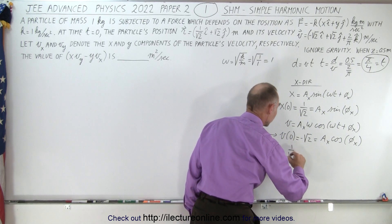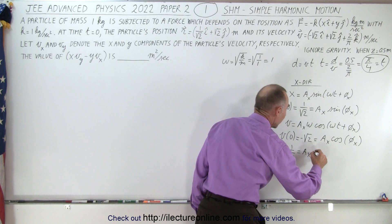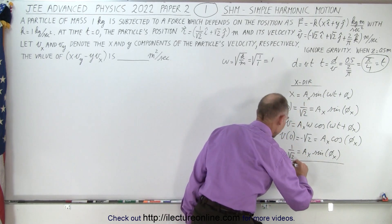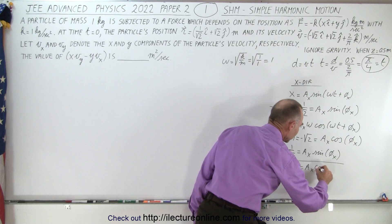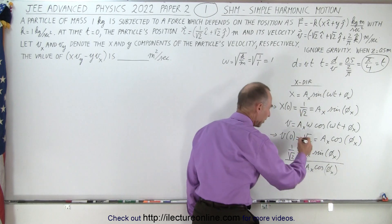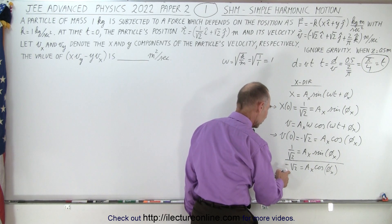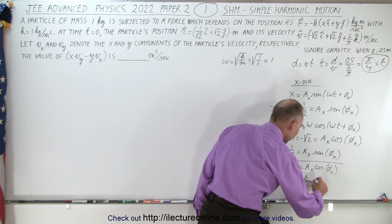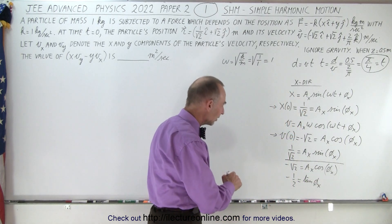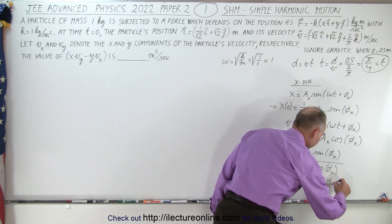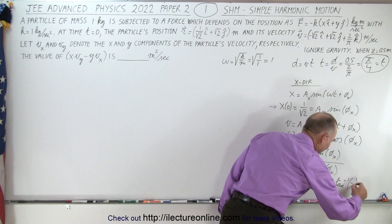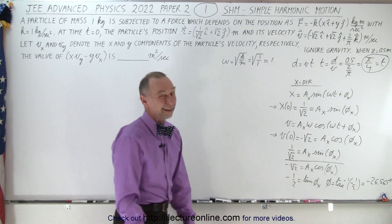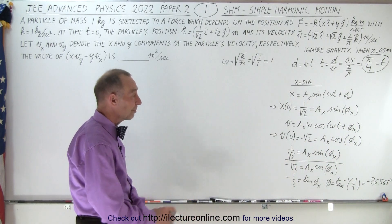So we have 1 over the square root of 2 equals a-sub-x times the sine of the phase angle in the x-direction, divided by the equation: minus the square root of 2 equals a-sub-x times the cosine of the phase angle. A-sub-x cancels out, and this becomes minus one-half equals sine over cosine, which is the tangent of the phase angle. So the phase angle equals the inverse tangent of negative one-half, which is minus 26.565 degrees. If you don't remember that value, just keep it as a phase angle and see what happens.